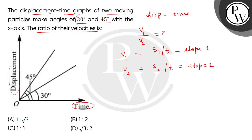We can write V1 is tan 30 degree, which will be 1 divided by square root 3. And slope 2 is tan 45 degree, which is equal to 1.